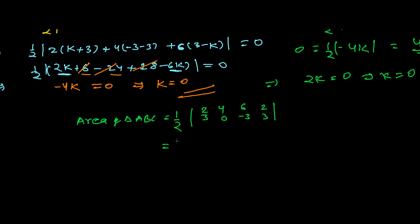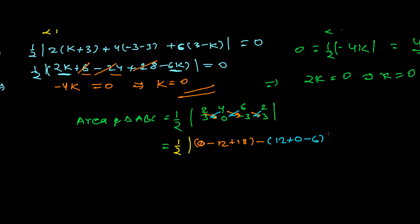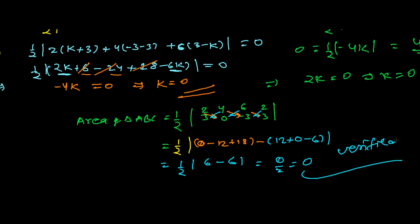Area = one-half times the diagonal differences. Southeast: 2 times 0 = 0, plus 4 times (−3) = −12, plus 6 times 3 = 18. Minus southwest: 4 times 3 = 12, plus 6 times 0 = 0, plus 2 times (−3) = −6. So it's one-half times [(0 − 12 + 18) − (12 + 0 − 6)] = one-half times [6 − 6] = one-half times 0 = 0. Hence verified — k = 0 is correct.